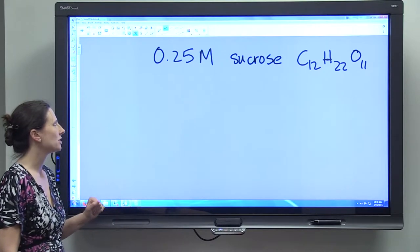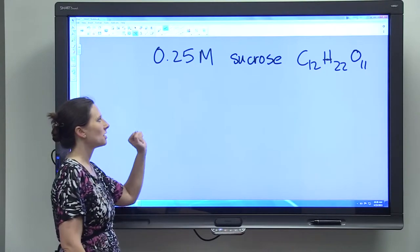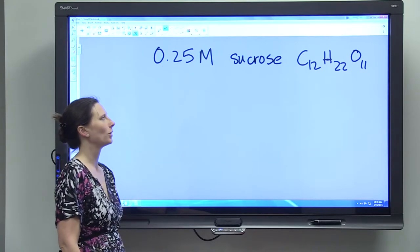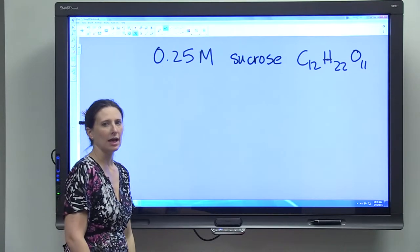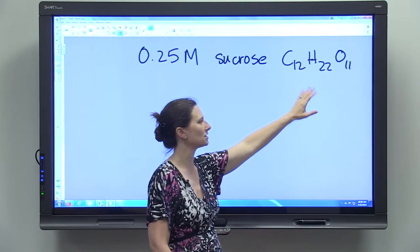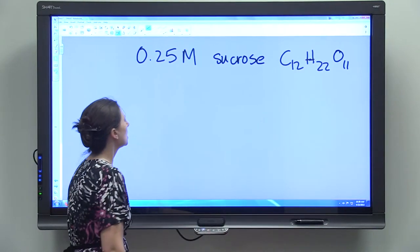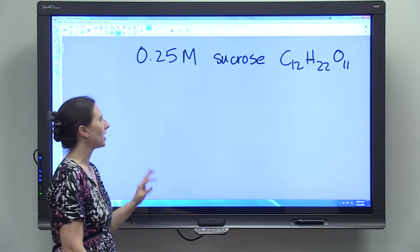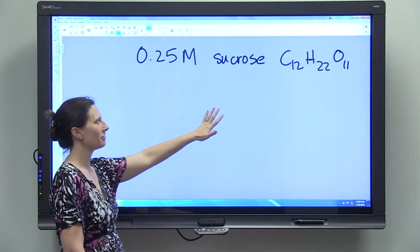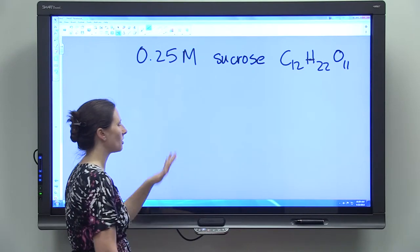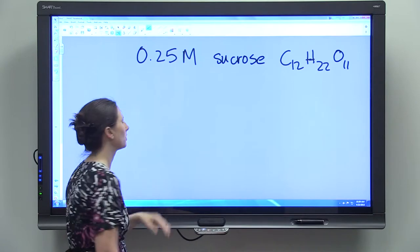The last example we're going to do is to calculate the number of grams needed to make a 0.25 molar sucrose solution. And sucrose is a bit of a bigger molecule, C12H22O11. And so we do it the exact same way that we've done the other molecules. So the size of the molecule doesn't really matter when you're doing these calculations. So don't let it overwhelm you to see a molecule that big.